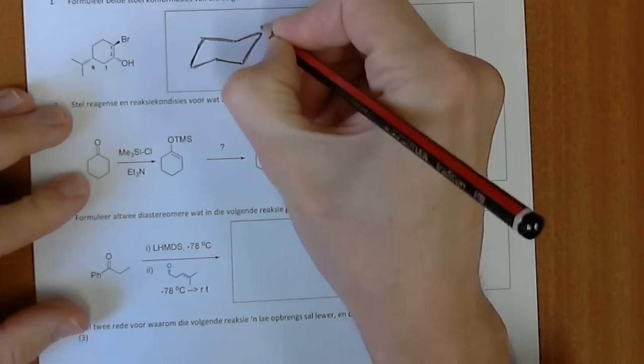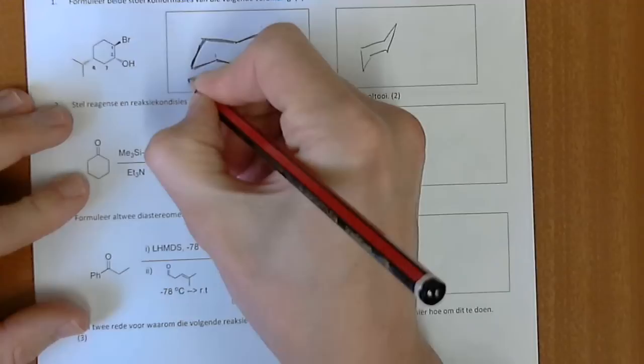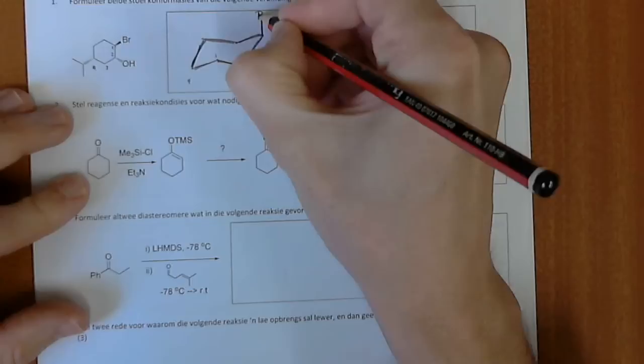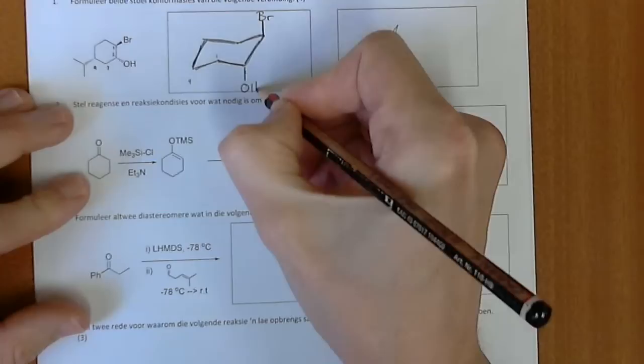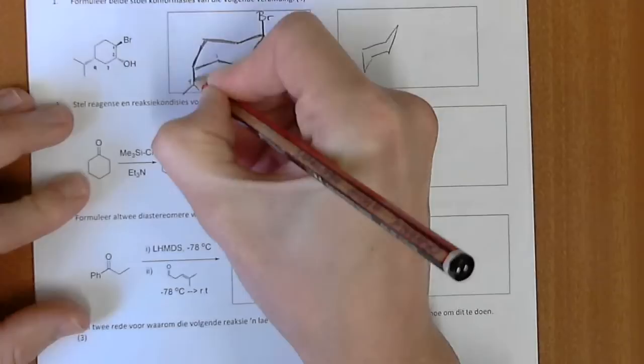So if we give this position one, then that's going to be two, that'll be three, and this'll be four. Okay, so Bromine's pointing up over there, so it must be going axial because the up position is that. It's got to be down over here, which means that it must be straight down because it's axial, and over here it must be straight down as well because it's in the down position. Down is axial in that position.